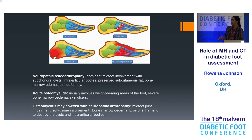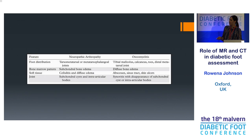This summarises the distribution: infection is predominantly seen in weight-bearing areas — hindfoot and forefoot — whereas with Charcot, we see it more in the midfoot. When you have an osteomyelitis with a Charcot, we do also see that in the midfoot.